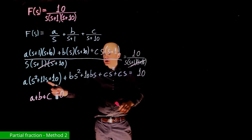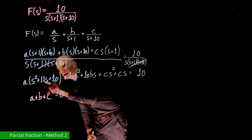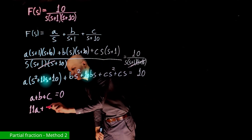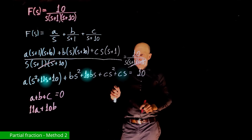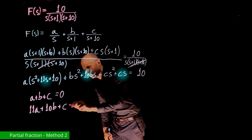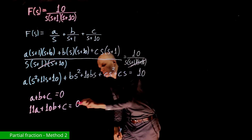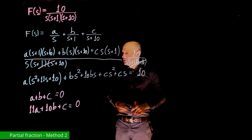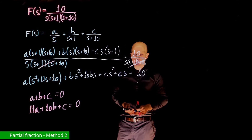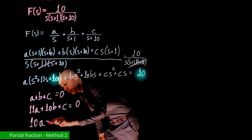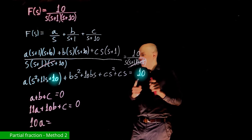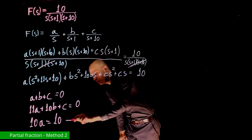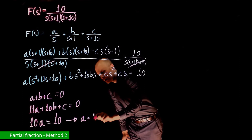For s, the coefficients give 11a + 10b + c = 0. For s⁰, only 10a appears on the left, equated to 10 on the right. From this last expression, a = 1.